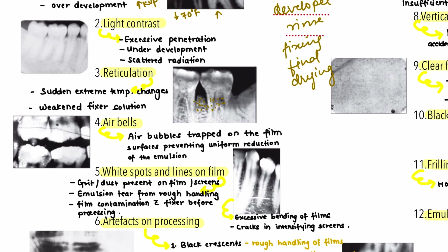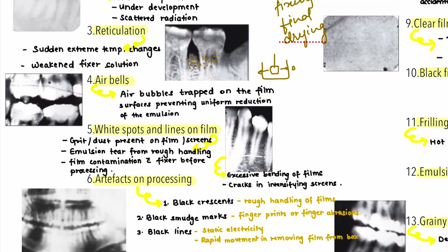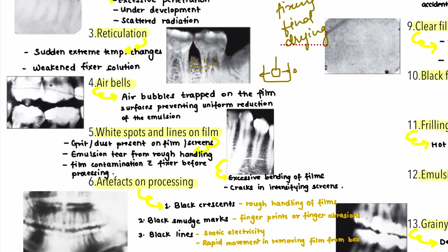The next processing error is air bells — air bubbles trapped on the film that prevent uniform reduction of the emulsion layer. This can be prevented by agitating the film when immersing it into the developer solution. As you immerse the film, keep it moving so that air bubbles are not trapped.